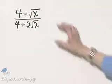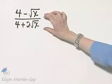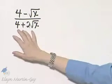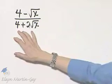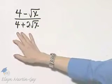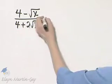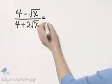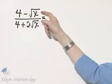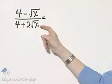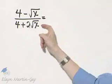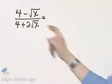We want to rationalize the denominator of this expression. Notice the denominator — we can think of this as a binomial, and so to rationalize this denominator, we'll multiply numerator and denominator by the conjugate of the denominator.